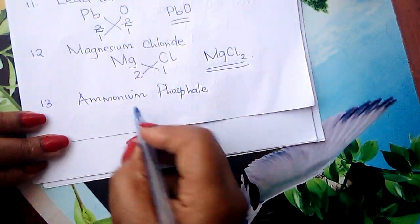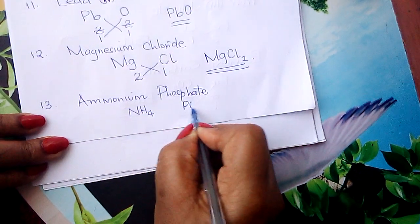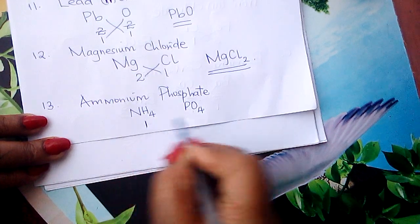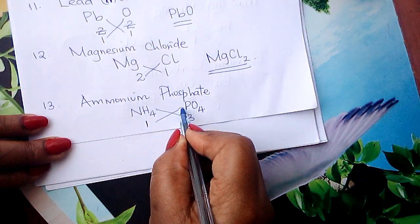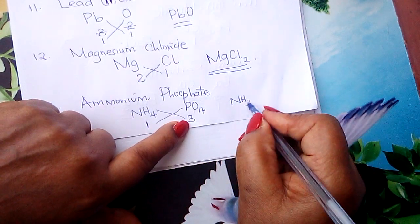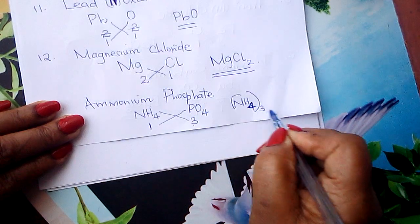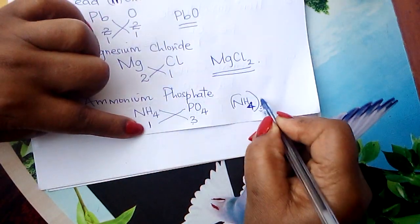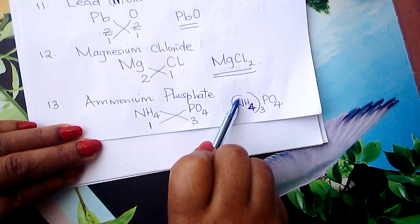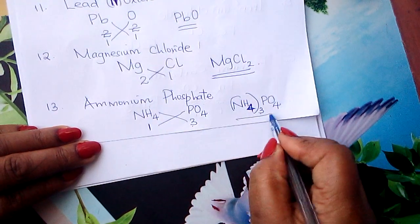Finally, ammonium phosphate. Ammonium radical is written as NH₄. Phosphate is PO₄. Ammonium valency is 1, phosphate valency is 3. Interchange: ammonium radical takes 3 — so put it inside the bracket: (NH₄)₃. Phosphate is another radical but it just takes 1, so write PO₄. Ammonium is a radical — if it takes more than 1, you put a bracket. So the formula of ammonium phosphate is (NH₄)₃PO₄.